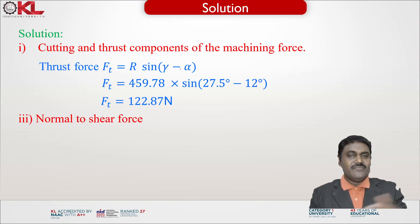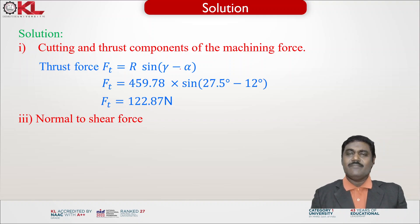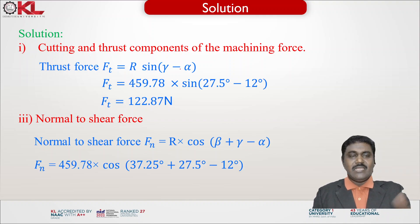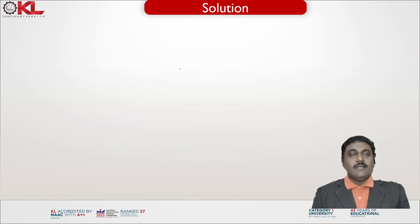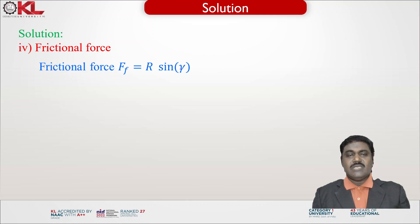The second item, shear force, is already calculated as 278.3 N. For the third item, normal to the shear force: from the merchant circle geometry, the normal to the shear force Fn = R × cos(β + γ − α). Substituting the data gives Fn = 364 Newtons.